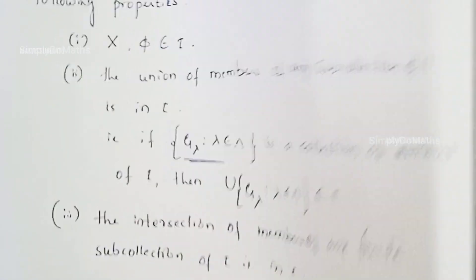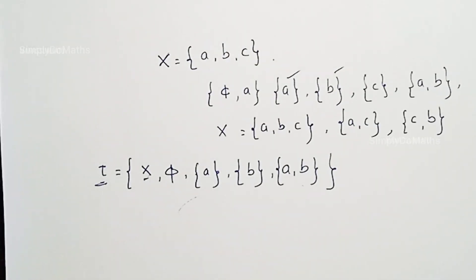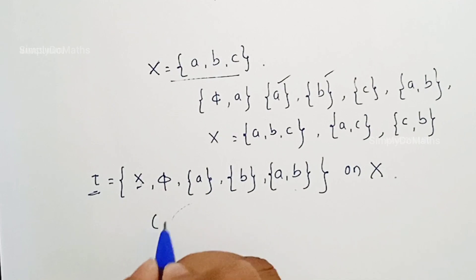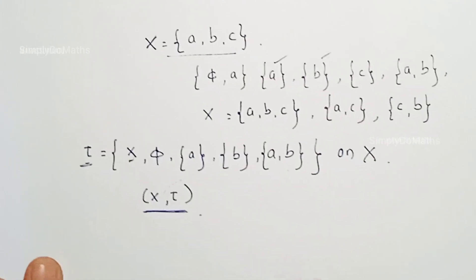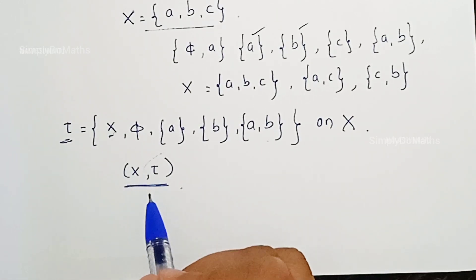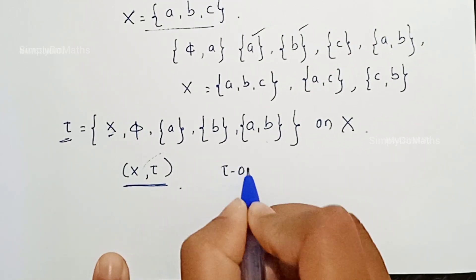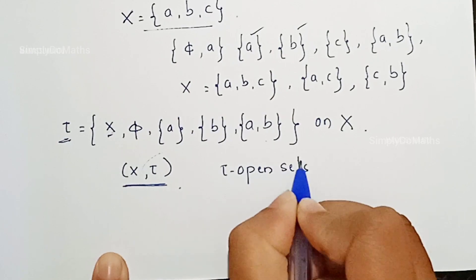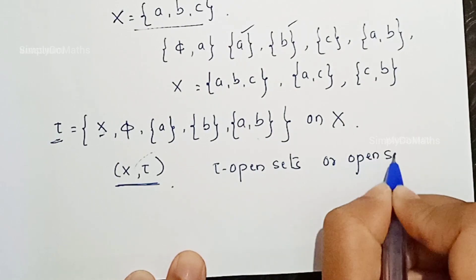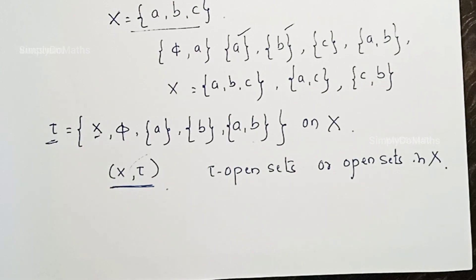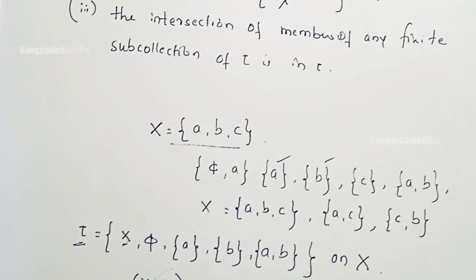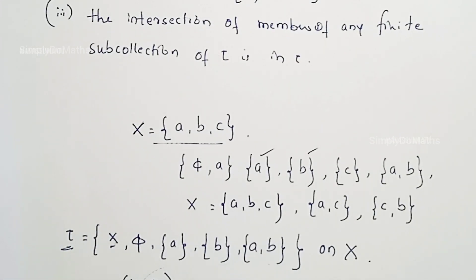Therefore we call this tau a topology on capital X. The ordered pair (X, tau) is called a topological space if tau is a topology on X. The members of tau are called tau-open sets, or simply open sets in X, or open subsets of X. This is the definition of topology, and based on this we will find more concepts in our next videos.